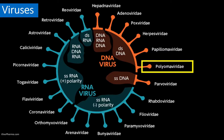I imagine many of you have been thinking about viruses more in the past year than ever before, but I want to orient you to the diversity of different virus families. Viruses can be roughly organized by the material and polarity of their genomes — be they positive-sense single-stranded RNA viruses like coronaviruses and flaviviruses, or double-stranded DNA genomes like herpes viruses, papillomaviruses, and polyomaviruses, or really anything in between. Today I'll be talking exclusively about polyomaviruses, which have a double-stranded DNA genome.